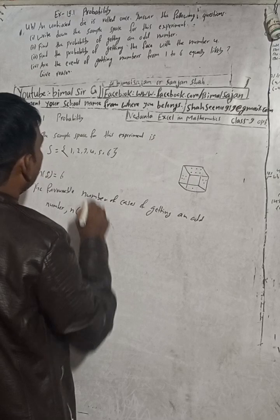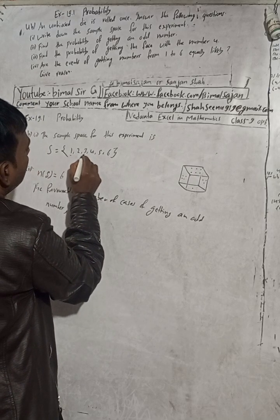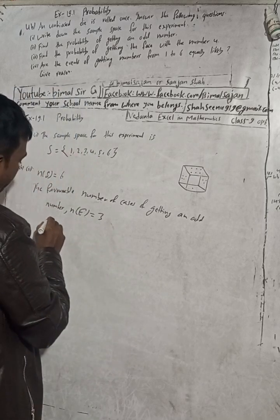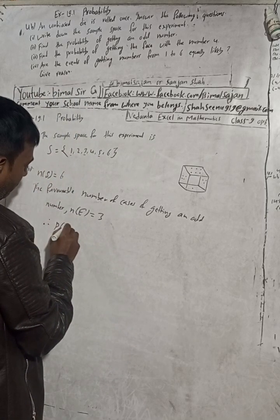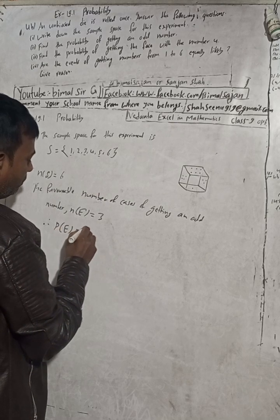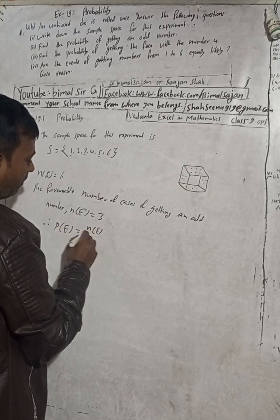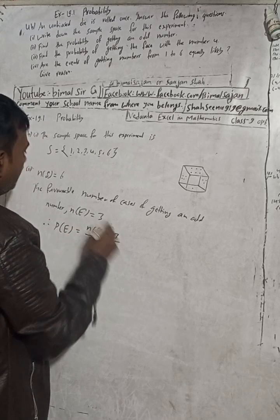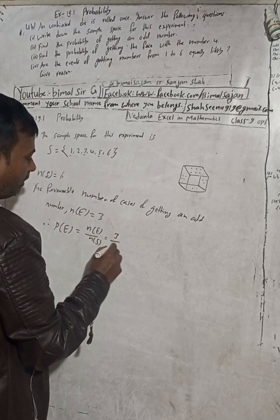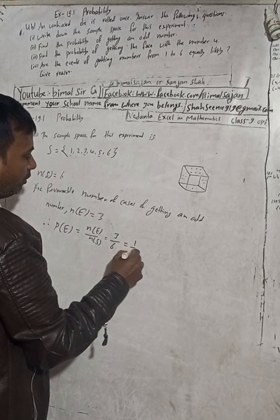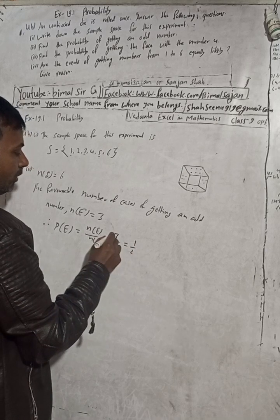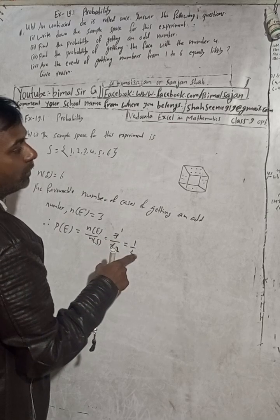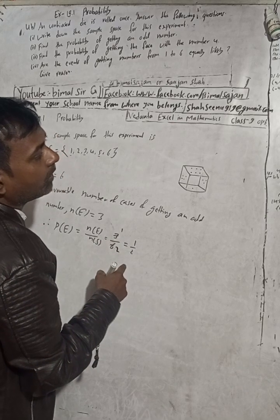The favorable number of cases of getting an odd number: the odd numbers are 1, 3, and 5, so there are three odd numbers. Therefore, P(E) = n(E) / n(S) = 3/6 = 1/2. So the answer is 1/2.